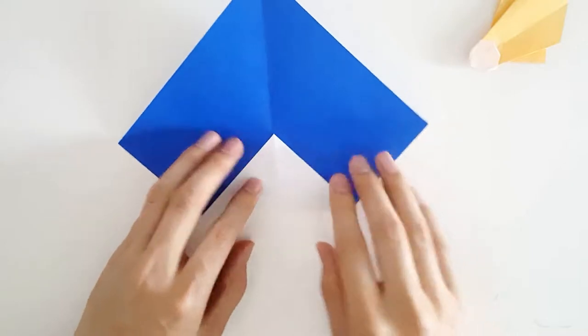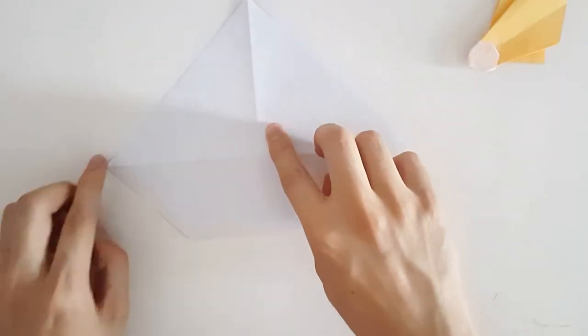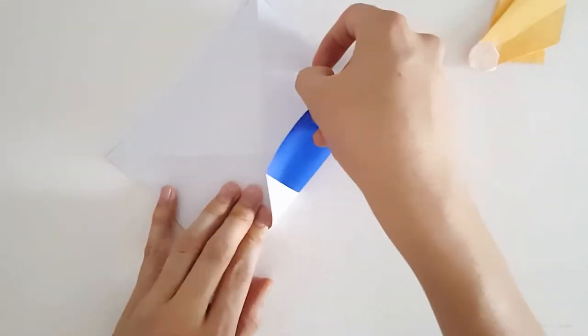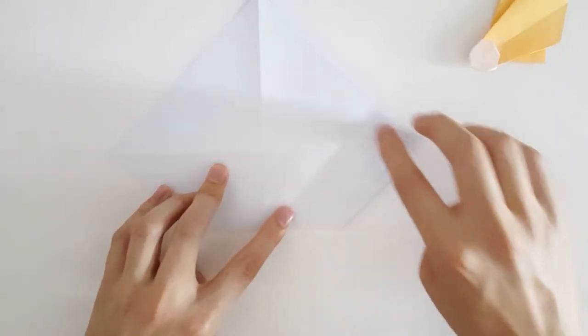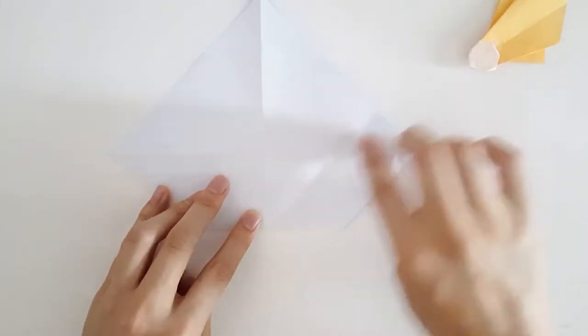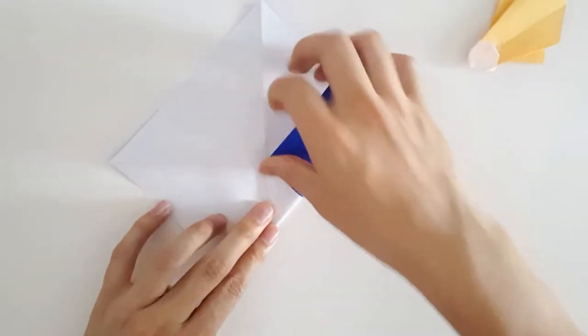Once we've done that, we're going to flip it, and we should be on the plain side. We're going to fold the edges so it will meet the crease. See how the bottom part is meeting the center? That's what we want. We're just going to fold it up like so.